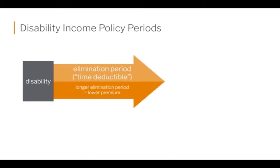Disability income policy periods — there are two of them. The first one is called the elimination period. You do not have coverage during the elimination period. You basically notify the company that you have a claim and then you start that elimination period — that waiting period before your benefits kick in. The longer the elimination period, the cheaper the premium because the insurance company isn't paying you any benefits. So the longer you're willing to accept that total risk yourself, the lower your premium would be.